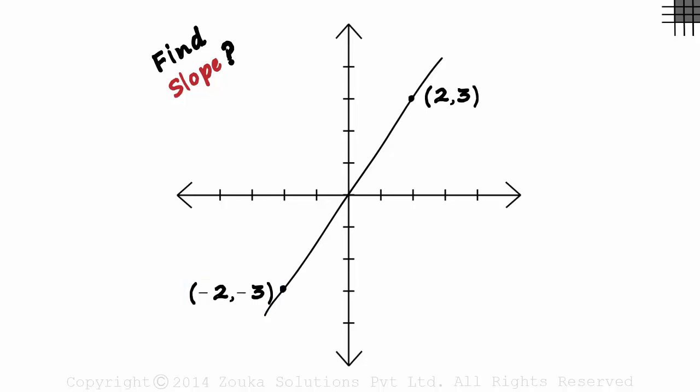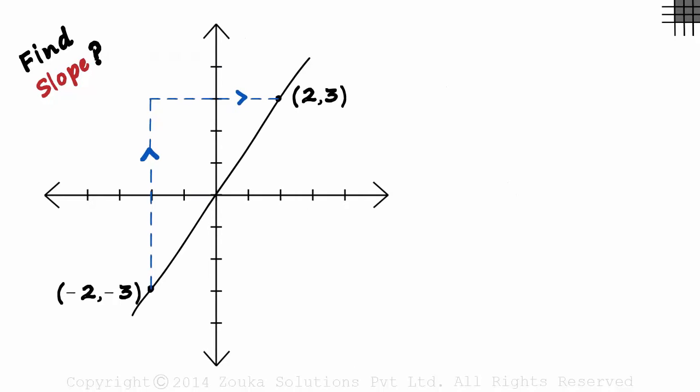To find the slope, we just need to find the ratio of rise over run. Okay, let's shift the camera to the right. The slope is rise over run.